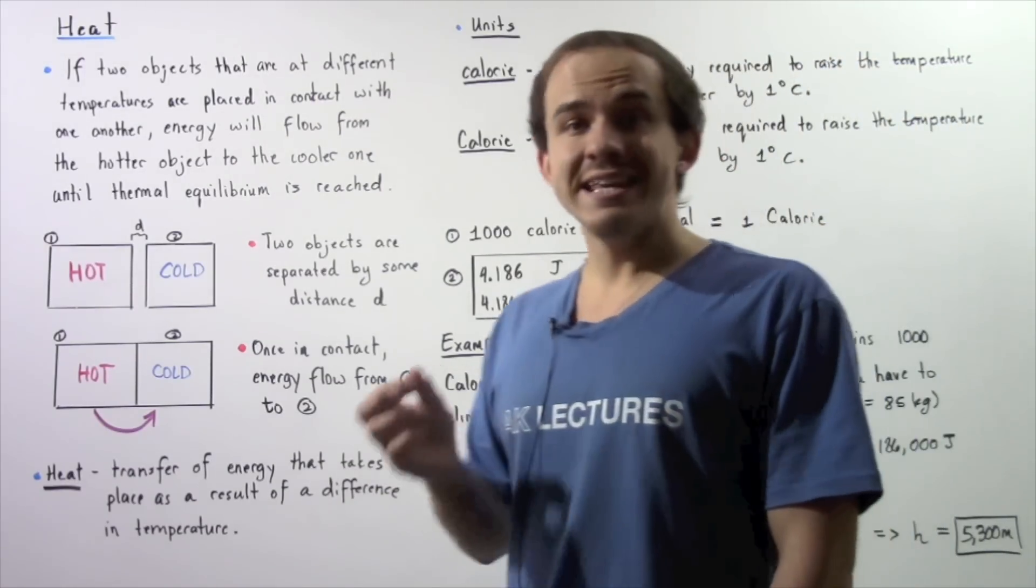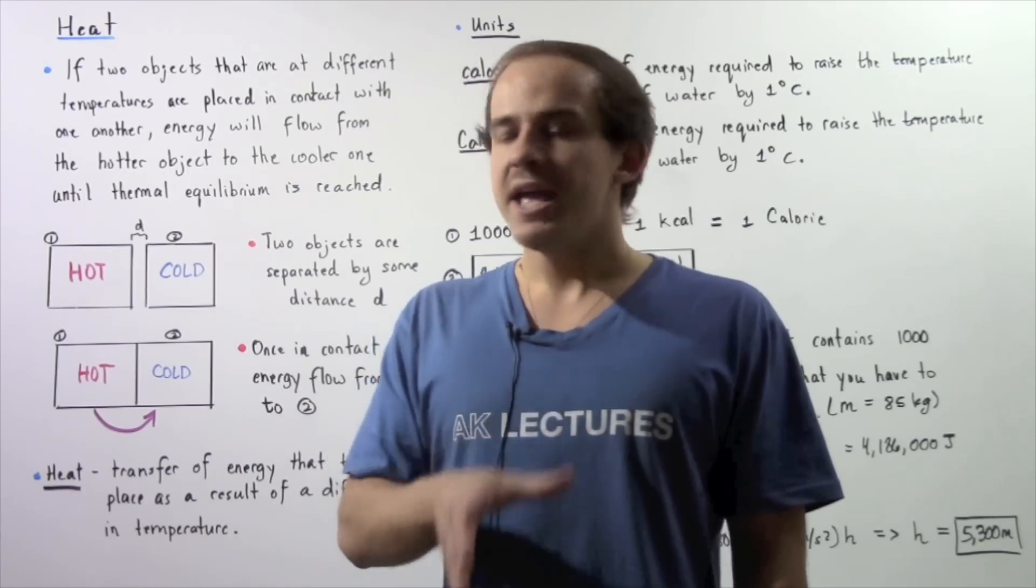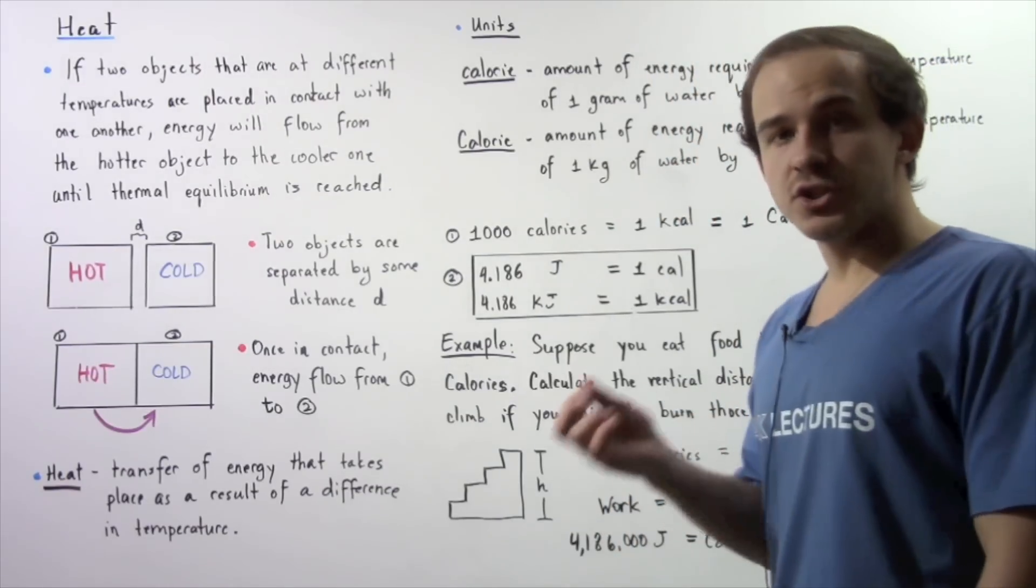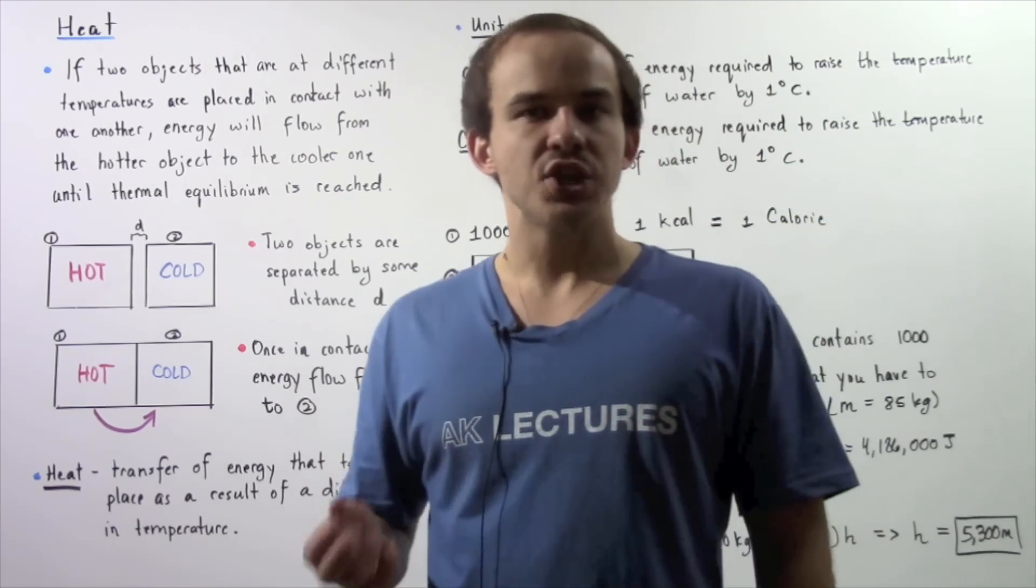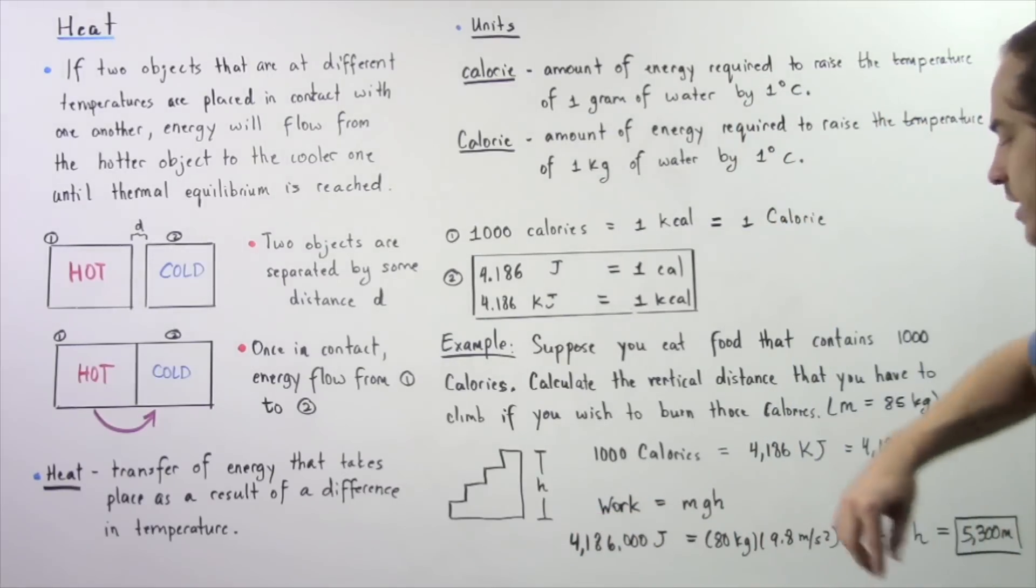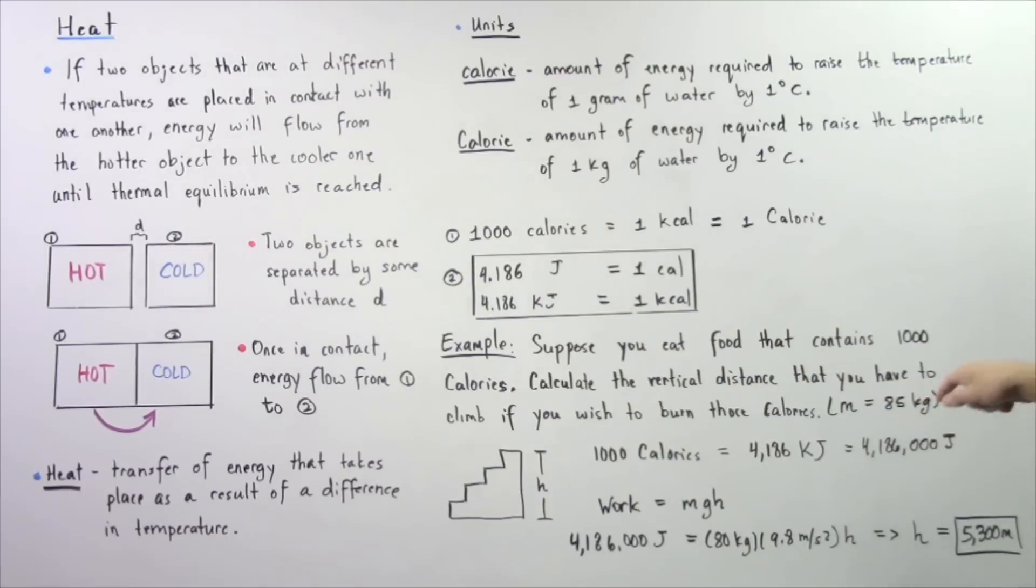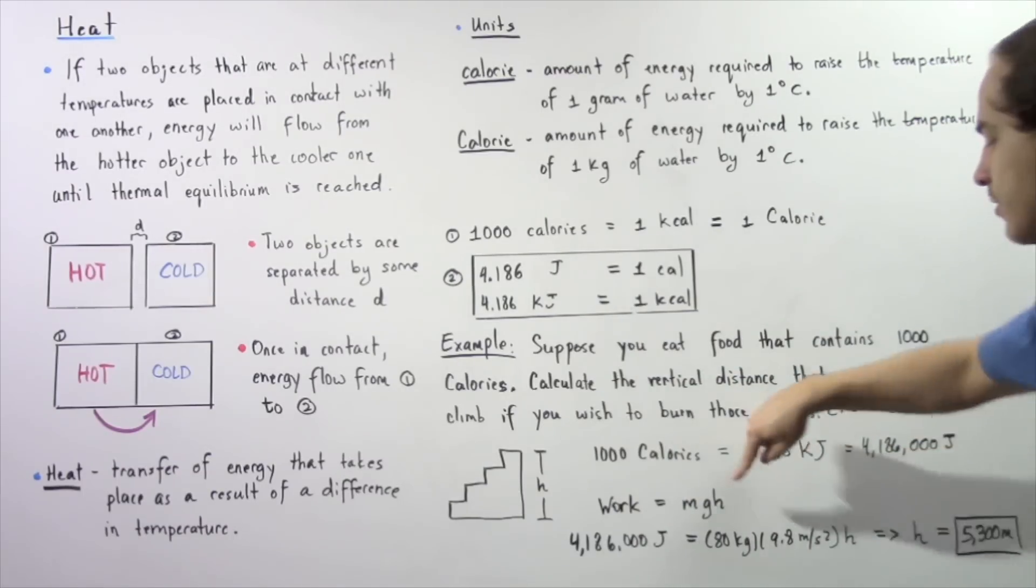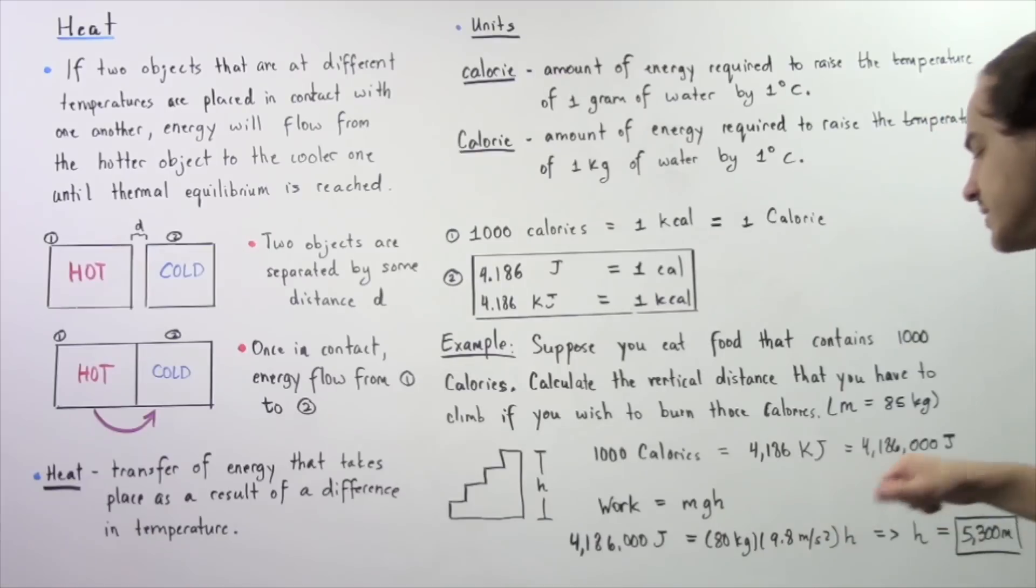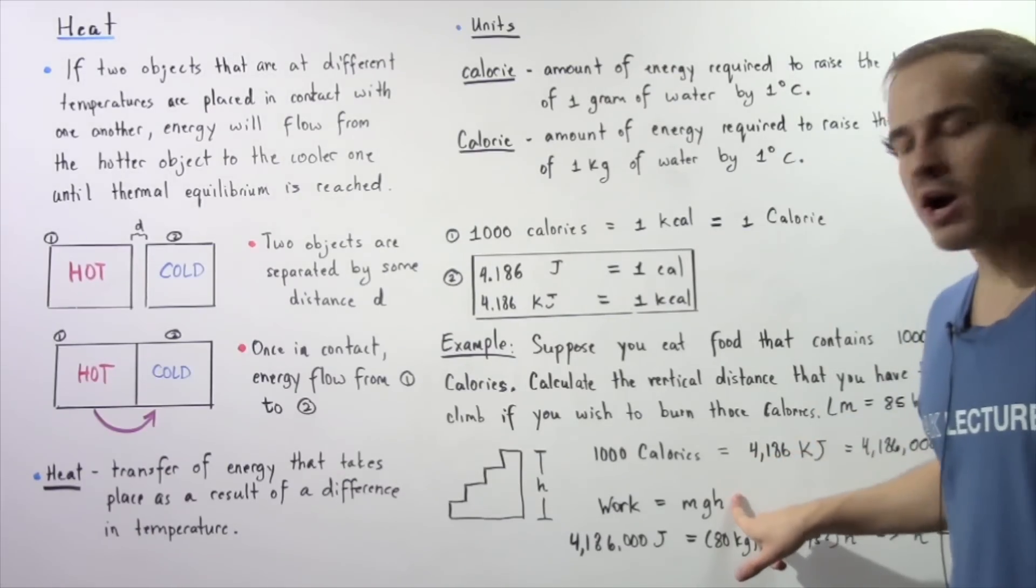Recall that work is equal to m times g times h, where m is the mass of the object in motion, the person, g is the gravitational constant, and h is our height. It's the change in potential. We want to find what this h is. So we multiply the mass 85 kilograms by g, 9.8 meters per second squared, then divide both sides by that value to get our height.